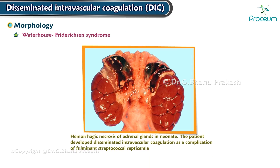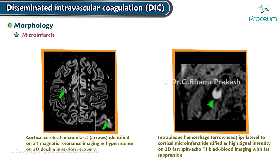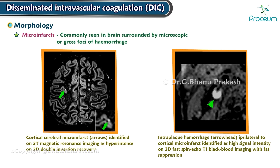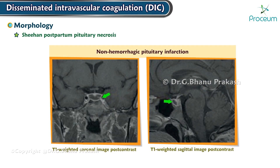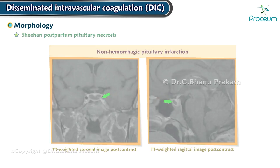In Waterhouse-Friderichsen syndrome, the adrenal glands are involved. Microinfarcts may also be commonly seen in the brain, surrounded by microscopic or gross foci of hemorrhage, giving rise to bizarre neurologic signs. DIC may lead to Sheehan postpartum pituitary necrosis.